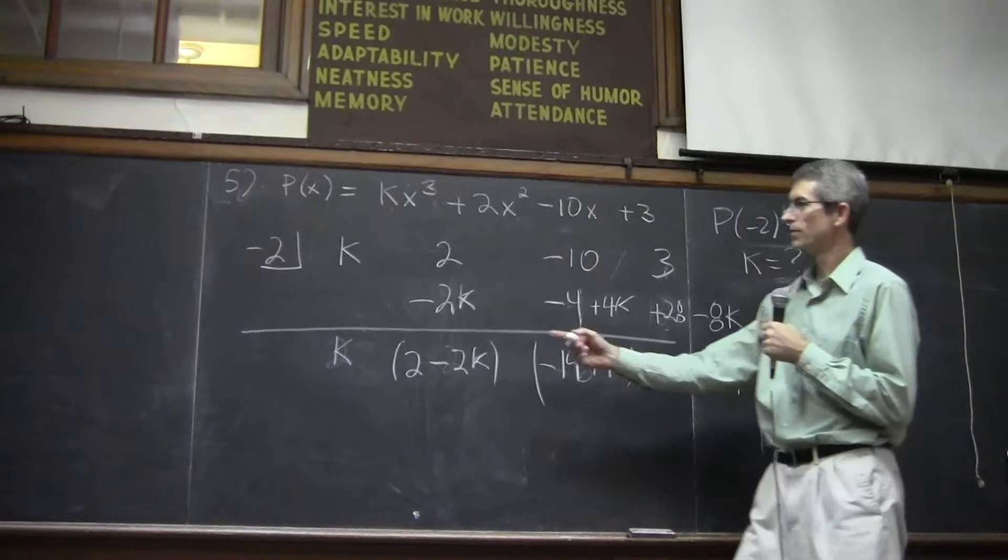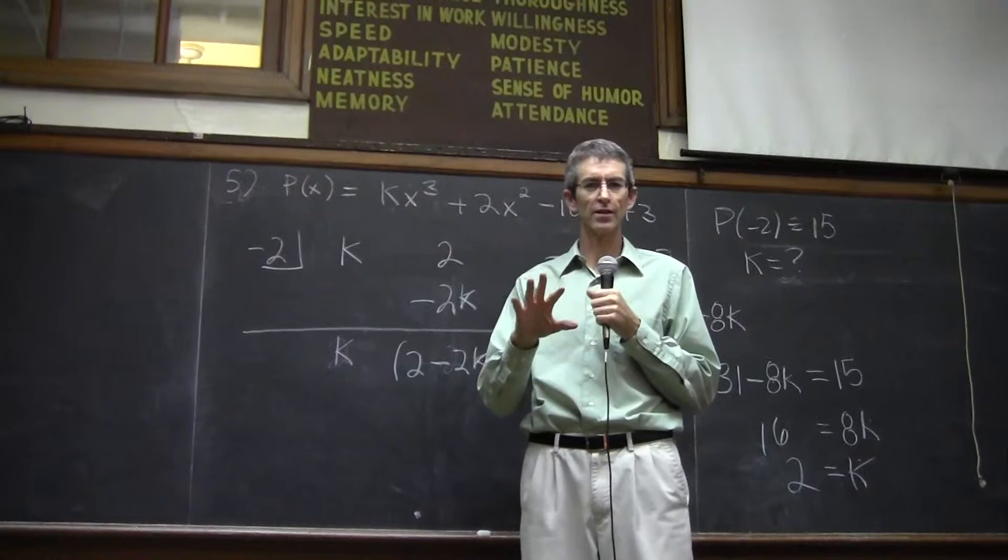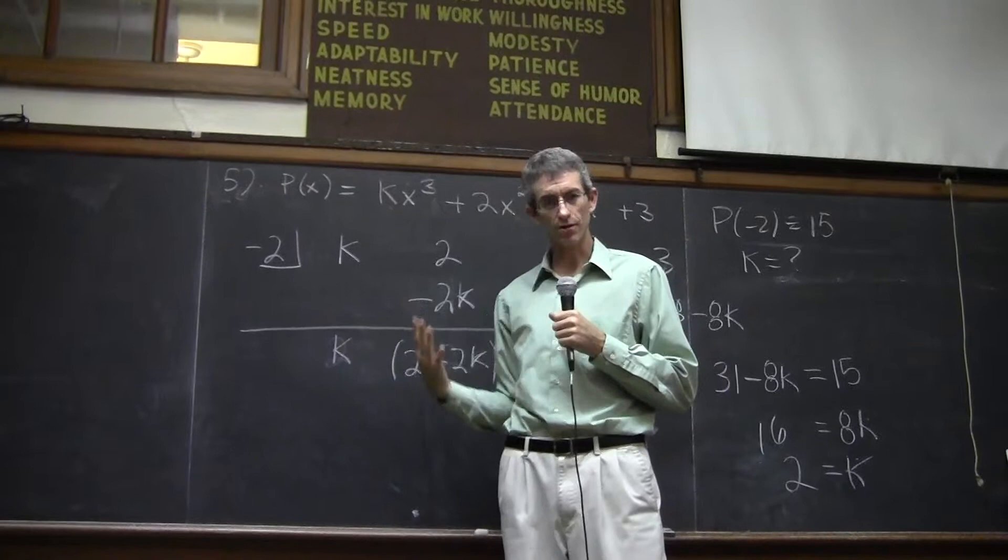So interesting little problem. Number problem number 6 is very similar. You're using negative 1 third instead of negative 2. And you're setting it equal to 0 at the end. So they just phrase it a little differently. But hopefully this will get you started.